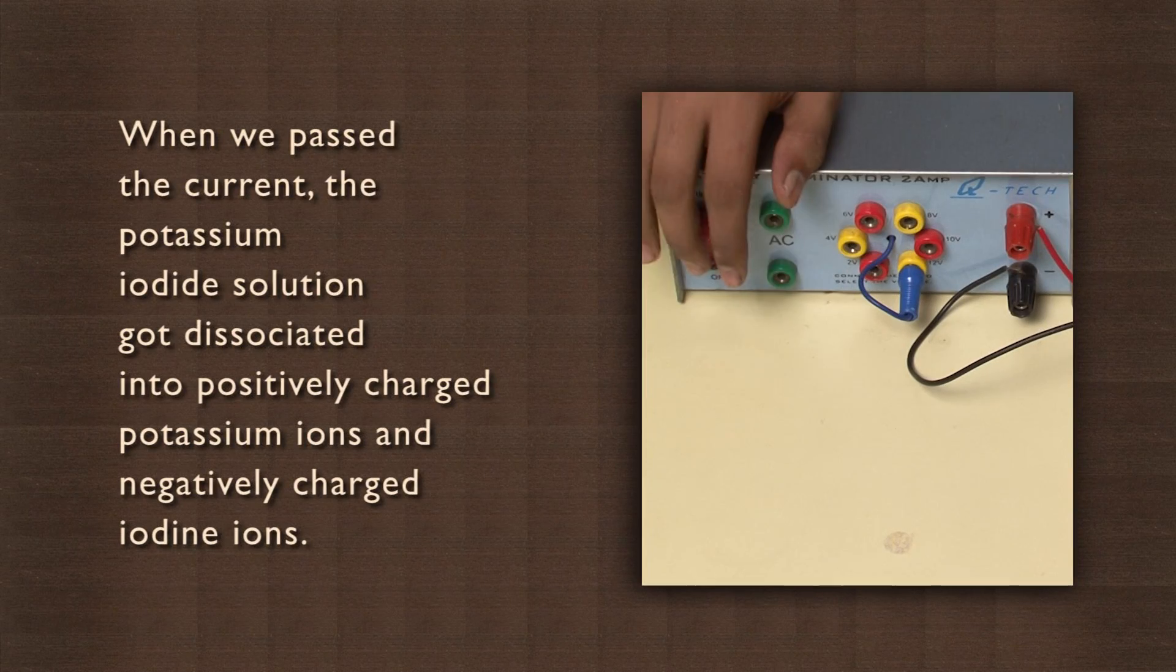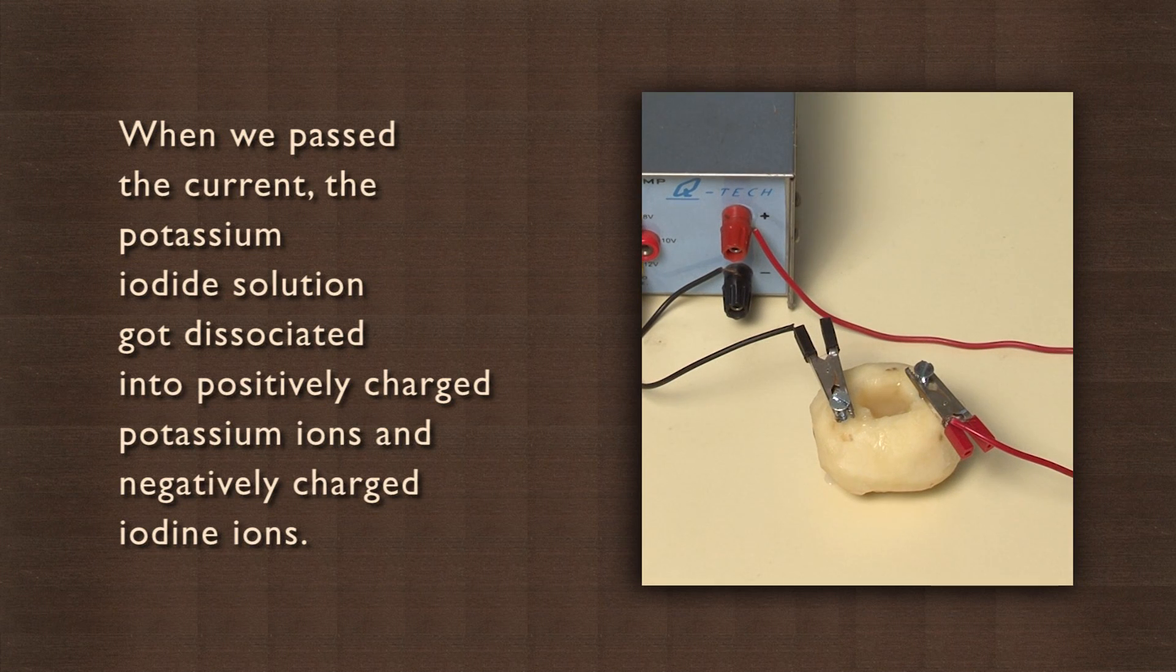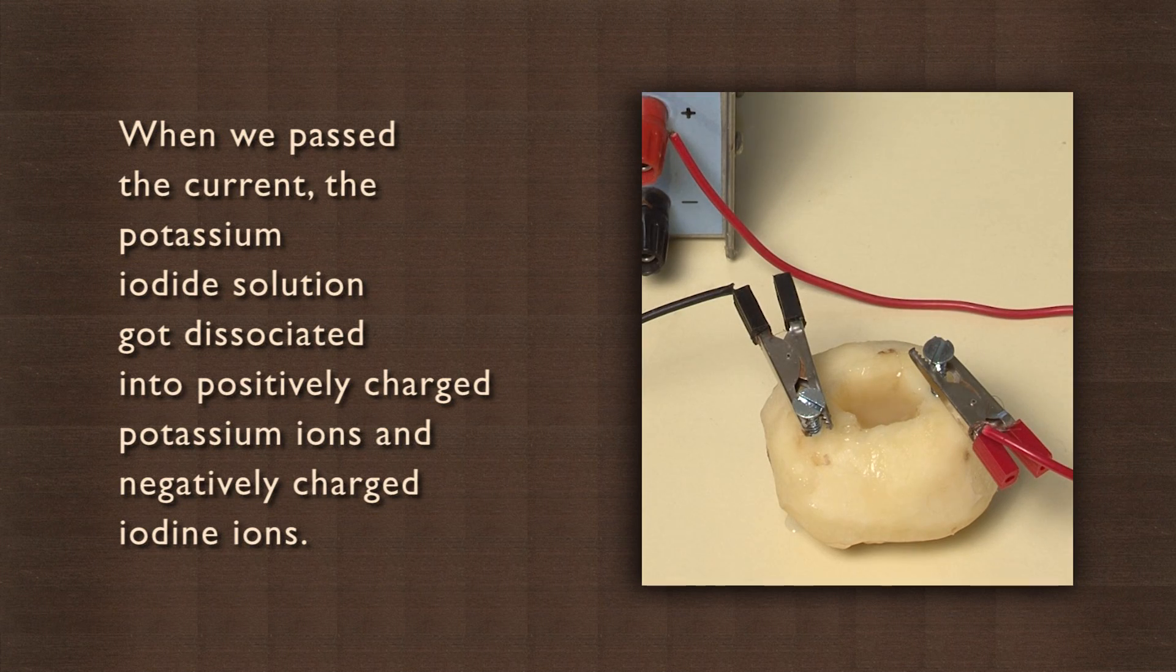When we passed a current, the potassium iodide solution got dissociated into positively charged potassium ions and negatively charged iodine ions.